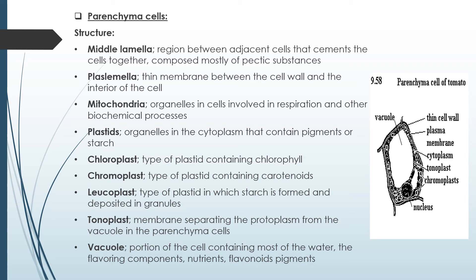As seen in the picture, there is a middle lamella — the region between adjacent cells that cements them together, composed mostly of pectin substances. The plasmalemma is a thin membrane between the cell wall and the interior of the cell. Mitochondria are organelles involved in respiration and other biochemical processes. Plastids in the cytoplasm contain pigments or starch: chloroplasts contain chlorophyll, chromoplasts contain carotenoids, and leucoplasts are where starch is formed and deposited. The tonoplast is a membrane separating the protoplasm from the vacuole. The vacuole contains most of the water, flavoring components, and nutrients.